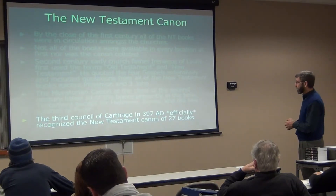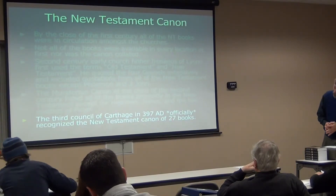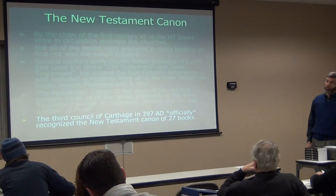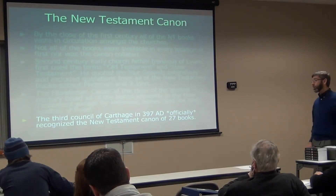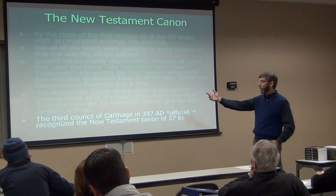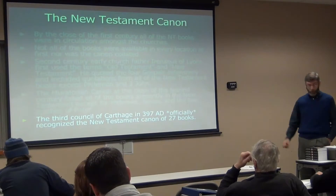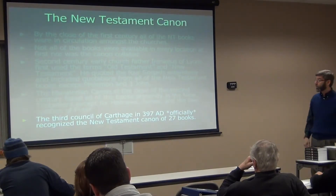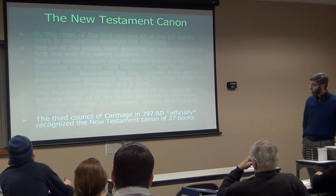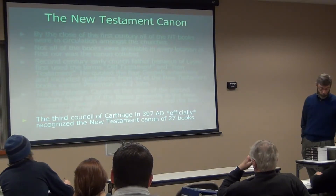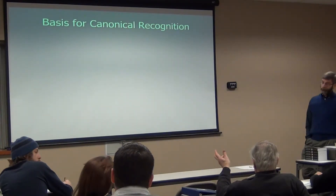The Muratorian Canon, at the close of the second century — by 199 AD — listed all the books present in the New Testament except for Hebrews, James, and the two epistles of Peter, so it would have had 23 books, not 27. The Third Council of Carthage in 397 AD officially recognized the New Testament canon of the 27 books that we have. There were several other collections and canons and there was not agreement for some time. Hebrews, James, and Peter's epistles had been written by a hundred years by then — they had them, they just didn't all accept them.